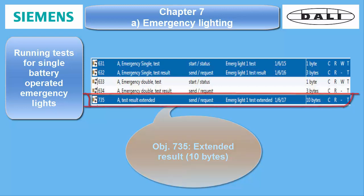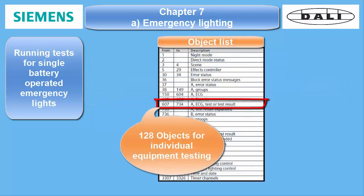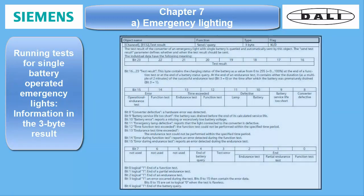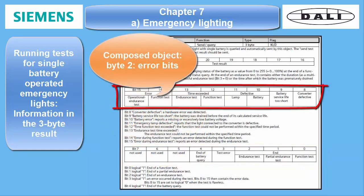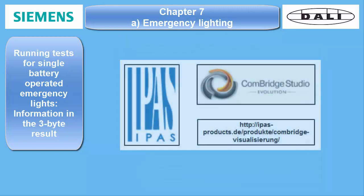While the simple test objects come along with each emergency ECG, the extended object is unique for each channel. That means the ballast number is encoded in the extended test result. All these objects are of the composed type, so if they should be used with a tool like visualization software, this tool must be capable of object value splitting as well as having a database to store all the results.